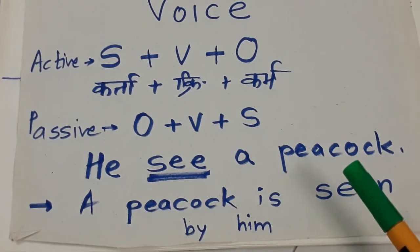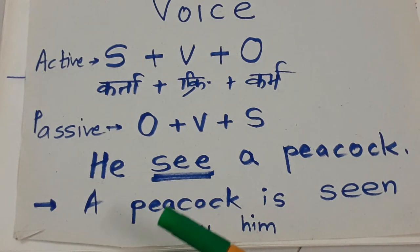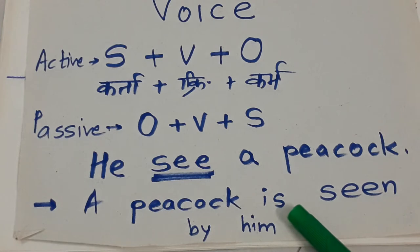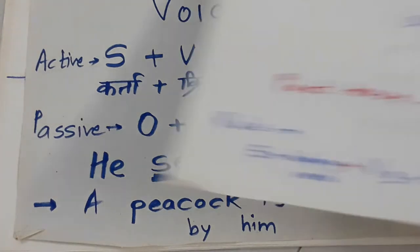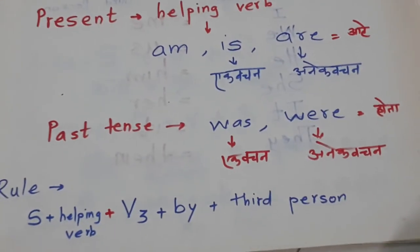Now the peacock which was object comes to the beginning: a peacock. Then we use helping verb. And V3, the third form of the verb. Add by in between. And then the first person and third person that we learned. Here he becomes him.